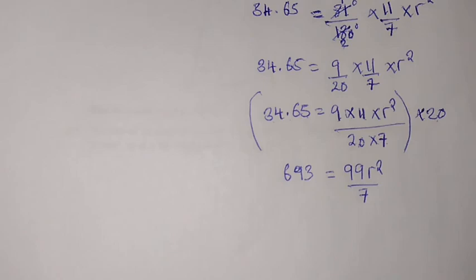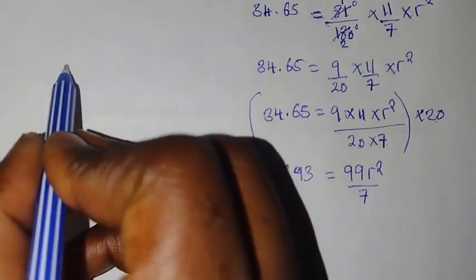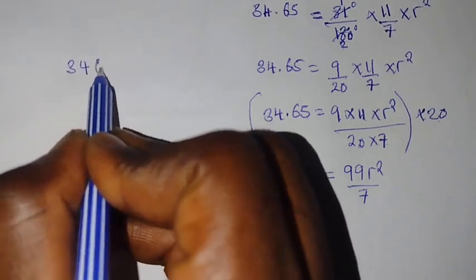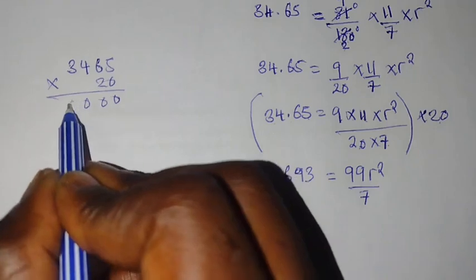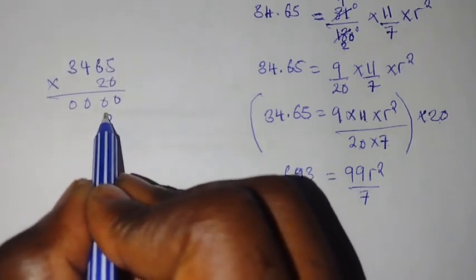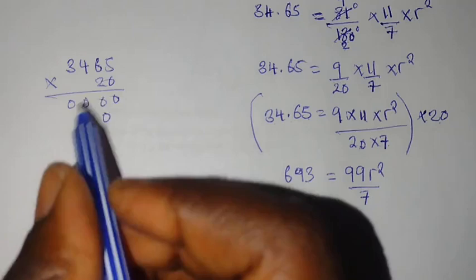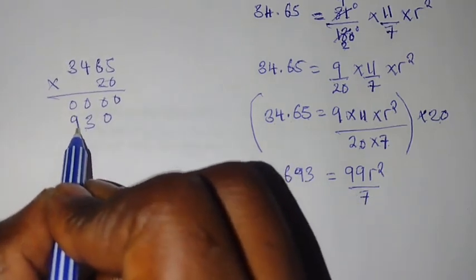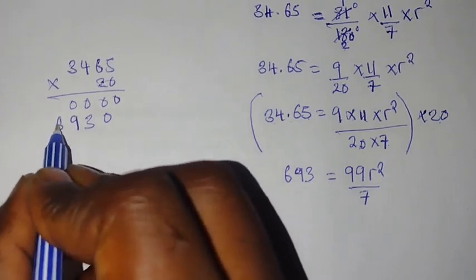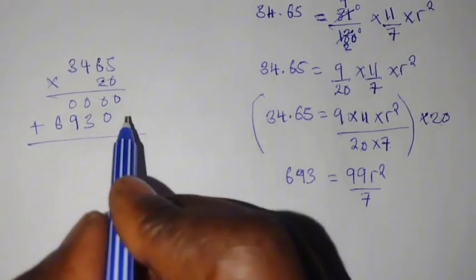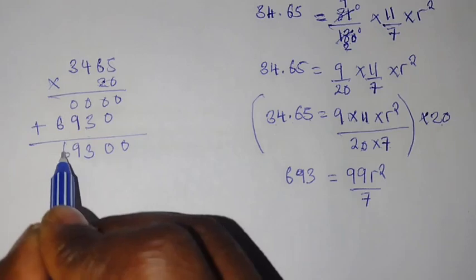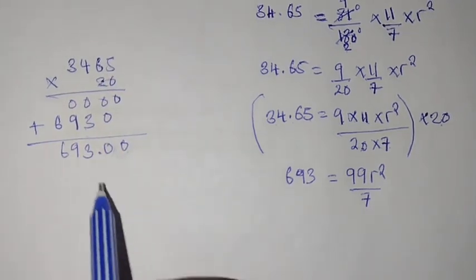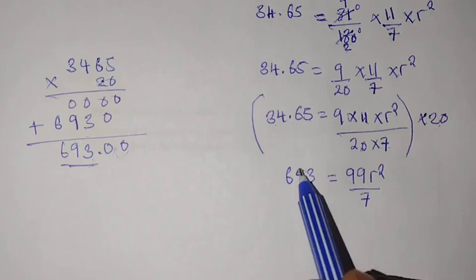When you multiply 34.65 times 20, you can try to multiply it here. 3, 4, 6, 5, ignore the point times 20 like this. 0, 0, 0, 0. 2 times 5 is 10, write 0, carry 1. 2 times 6 is 12 plus 1 is 13. 2 times 4 is 8 plus 1 is 9. 2 times 3 is 6. You can try to add: 0, 0, then here we have 3, 9, 6. This one has two decimal places. So 1, 2, we have 693. This is what we got right here.